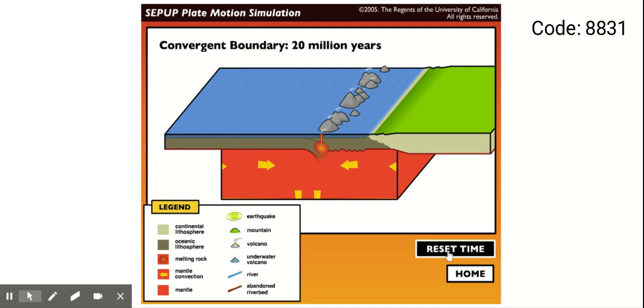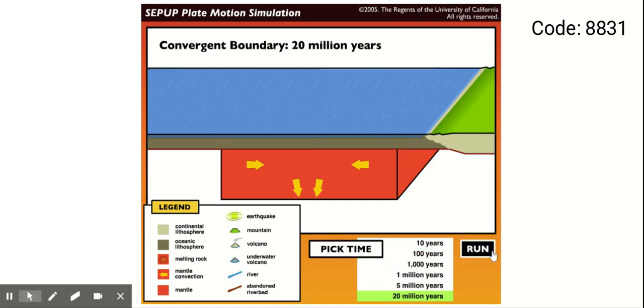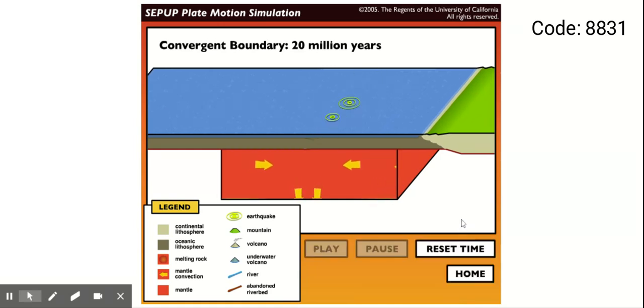I'm gonna run through this one more time just so you can watch it happen again. In 20 million years we're gonna run this and watch the formation of those volcanic islands off the coast of the continent where one oceanic plate goes under another.